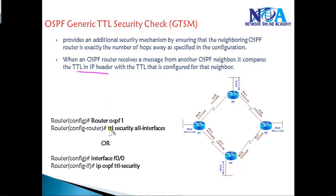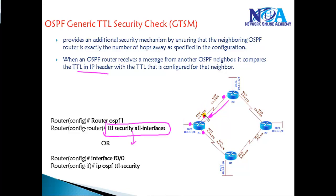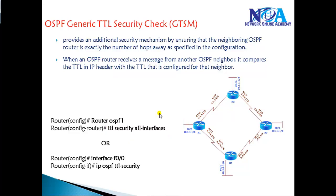To enable this feature, we go to router OSPF 1 and say 'ttl security all interfaces' under router mode, which applies it to each and every interface. The other side also has to be configured — if both sides are configured and the hop count matches the TTL value in the IP header, then only the neighborship will come up. We can enable for all interfaces globally or for a specific interface only.